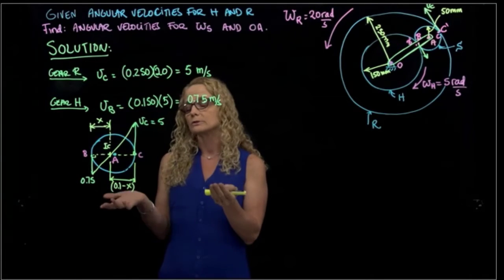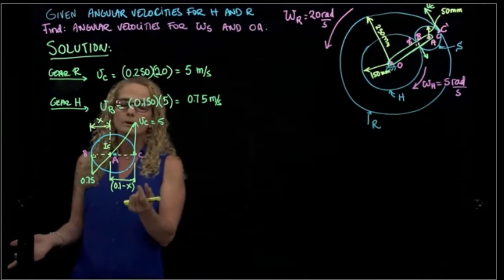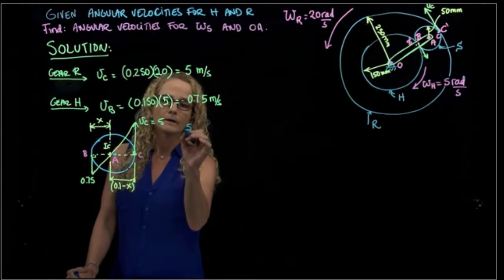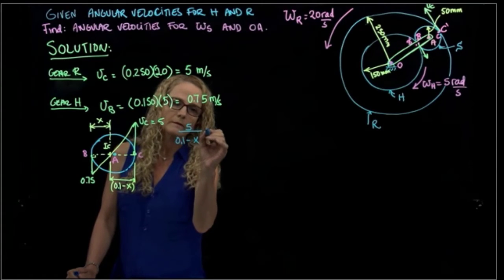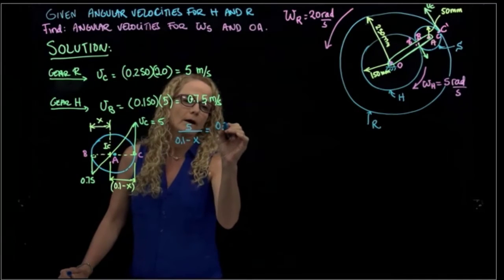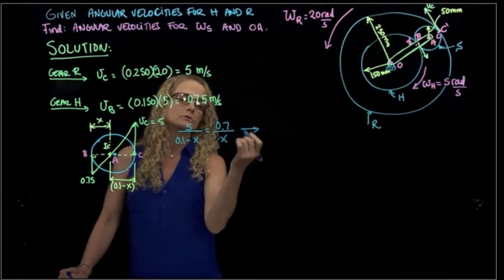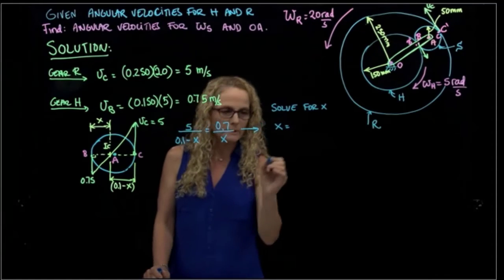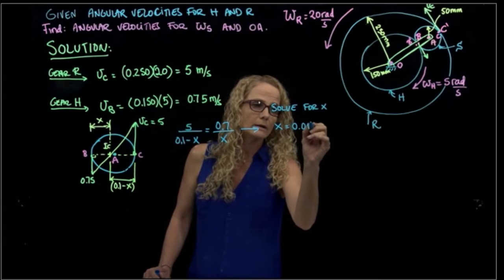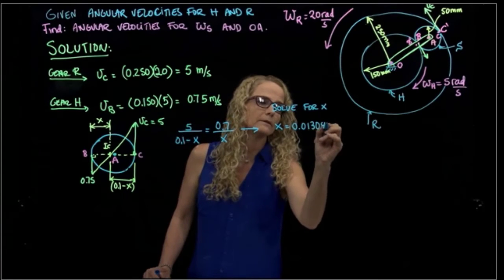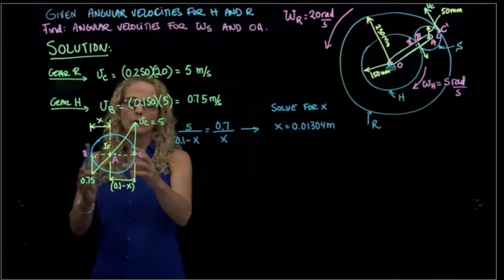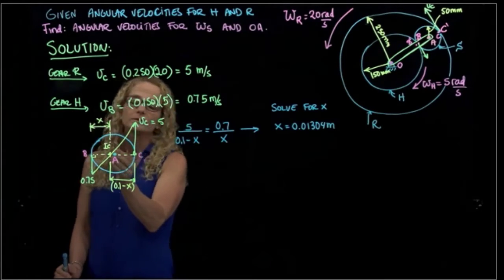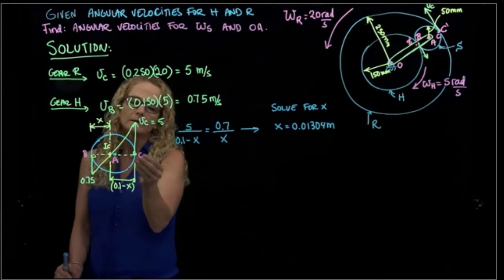We use similar triangles to find where x is located. The height divided by the base equals height divided by base, giving: 5 divided by (0.1 minus x) equals 0.75 divided by x. Solving for x gives 0.0134 meters. The drawing is not proportional since 5 versus 0.75 is more than a 6-to-1 ratio, so the instantaneous center of rotation is much closer to B than to C.